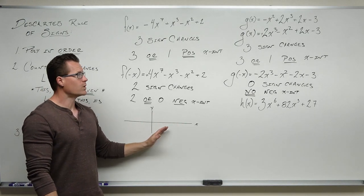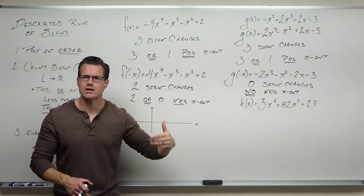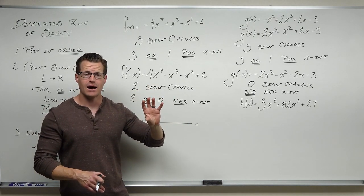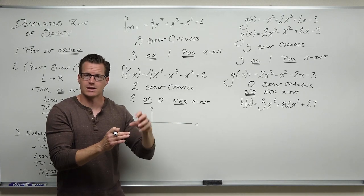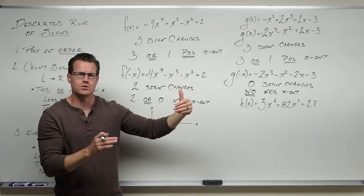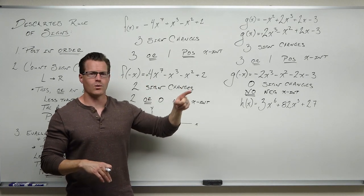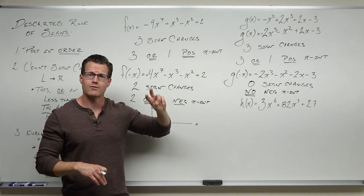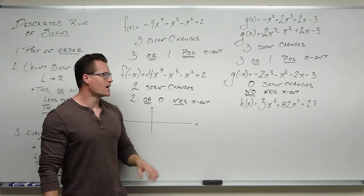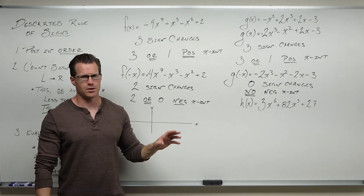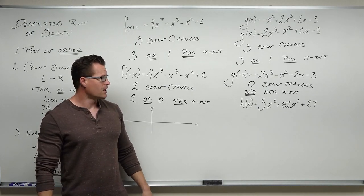So wrapping this whole thing up with this example: we put it in order, checked our sign changes — three or one positive x-intercepts. We changed our odd power terms by evaluating negative x and got zero sign changes — zero negative x-intercepts. So you either touch the positive x-axis once or three times, and you are not going to cross over on the negative side. Then you start dividing. When we divided out x minus one as the factor, we got an irreducible quadratic — which means we're not going to have any more than one positive x-intercept. We found our one. But when you divide that out and get an irreducible quadratic, you can't go to three — that irreducible quadratic is why you go from three to one. It took two away from your degree but yielded no more x-intercepts.